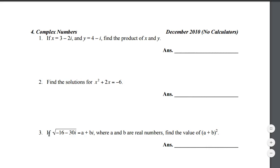If the square root of negative 16 minus 30i equals a plus bi, where a and b are real numbers, find the value of a plus b squared.